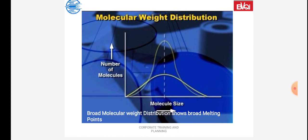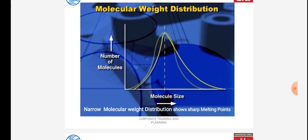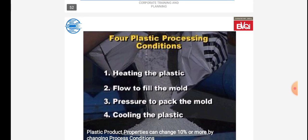Molecular weight distribution is given in the following graph showing number of molecules versus molecule size. Broad molecular weight distribution shows a range of melting points. Linear and narrow molecular weight distribution show sharp melting points. Above the mentioned characteristics, chemical cooling involves small flow to fill the mold.